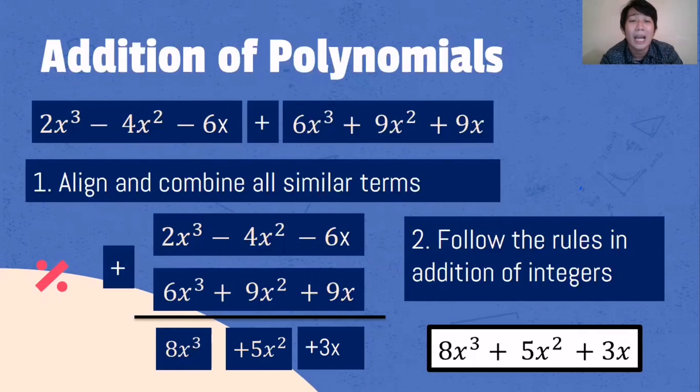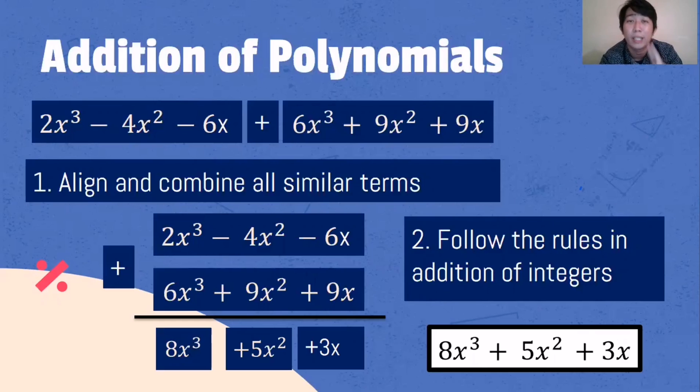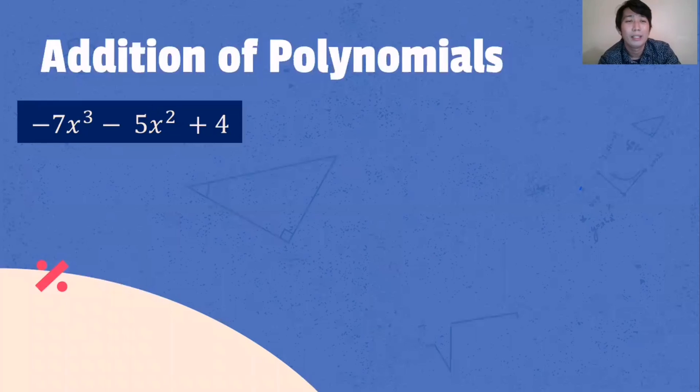So the answer for this problem will be 8x cubed plus 5x squared plus 3x. Step one: align and combine all similar terms. Step two: follow the rules in addition of integers.